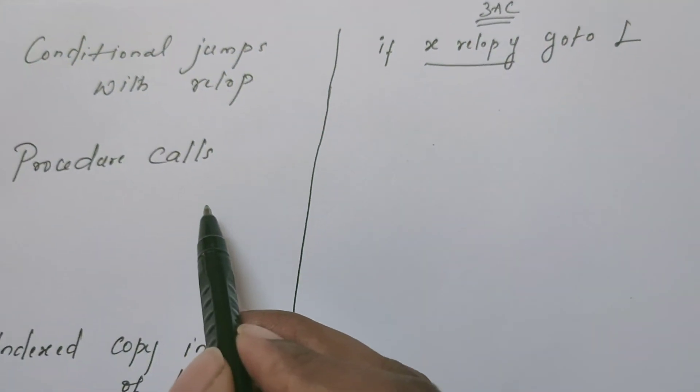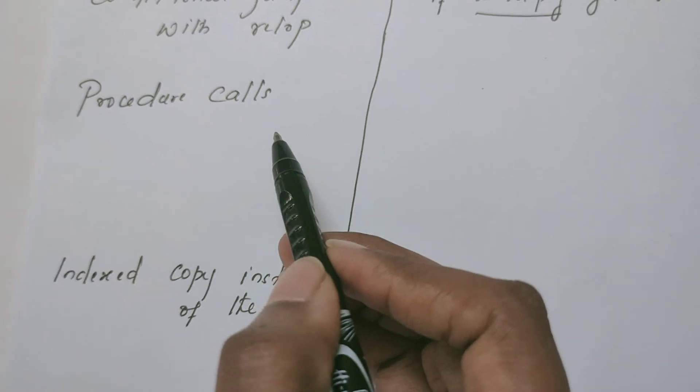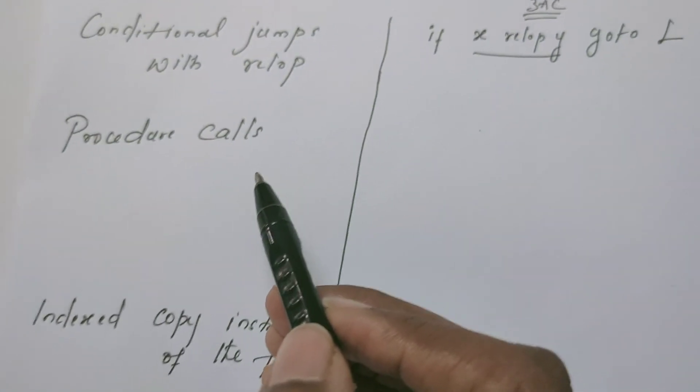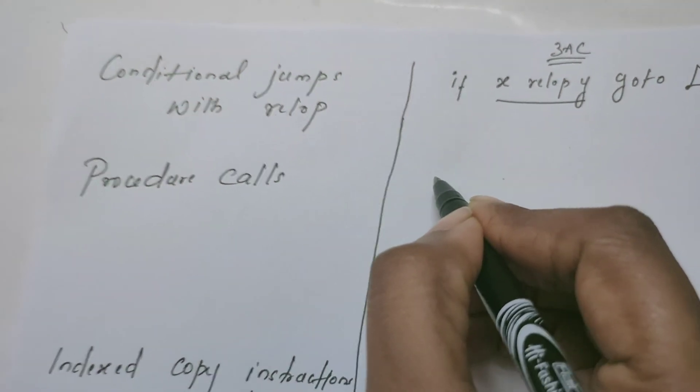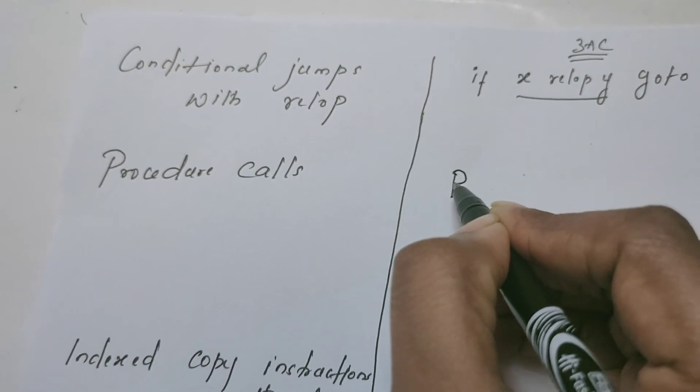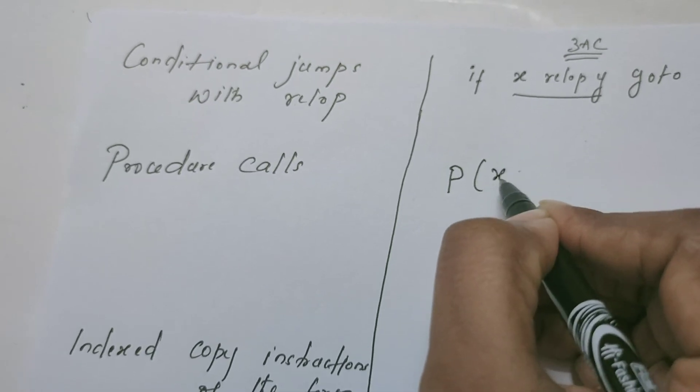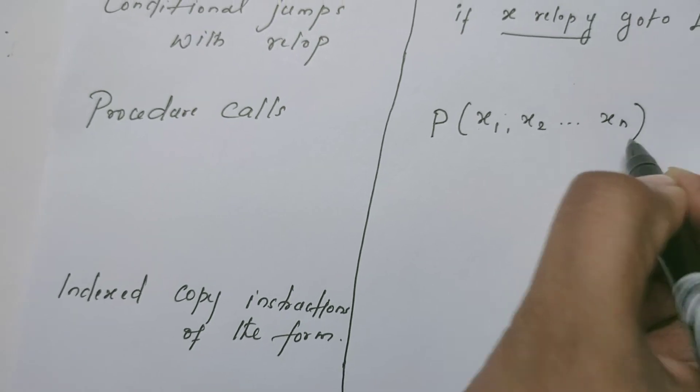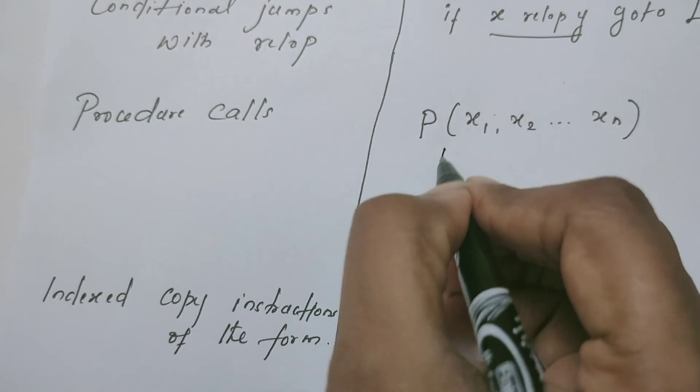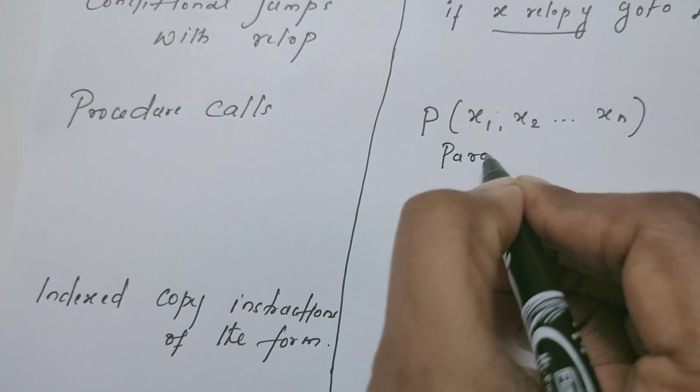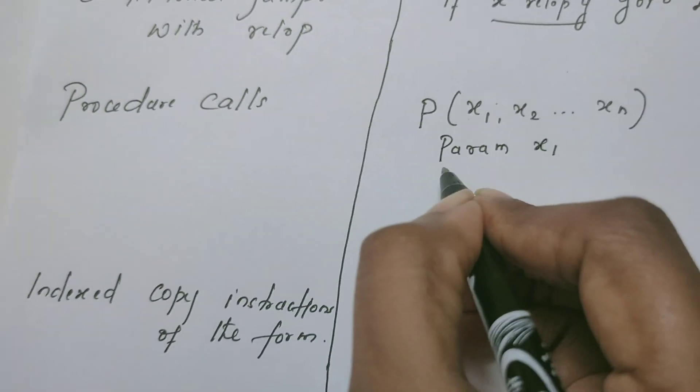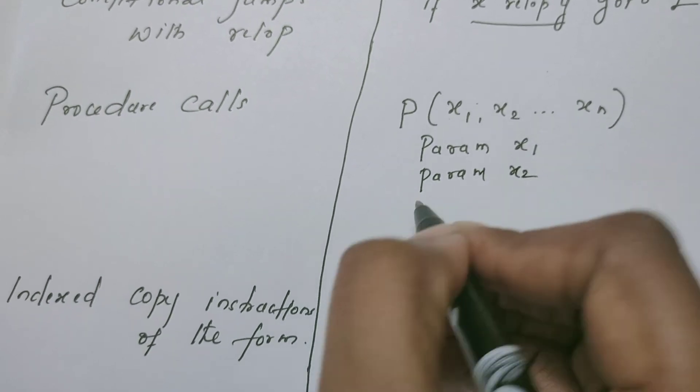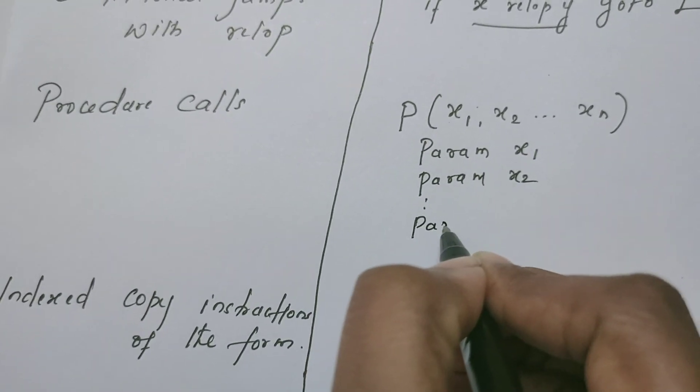Now let us see how the procedure calls or user-defined functions or built-in functions of high-level language can be written in three address code. The function would have been written like this: P is the name of the procedure. It might be having a list of parameters like this. Those x1 and x2 are being declared as parameter: param x1, param x2, etc., param xn.